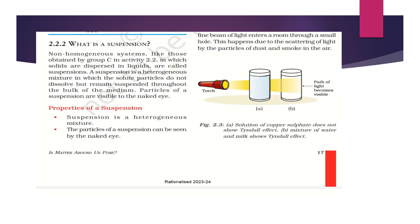Now, what is a suspension? We have already discussed what a solution and a mixture are. Now, suspension involves non-homogeneous systems — like in Group C activity, where we took 50 ml of water and added wheat flour or chalk powder. The solids dispersed in this way are called suspensions. A suspension is a heterogeneous mixture in which the solute particles do not dissolve but remain suspended throughout the bulk of the medium.